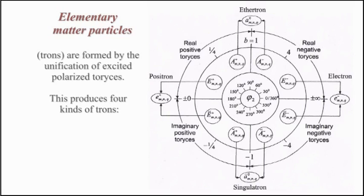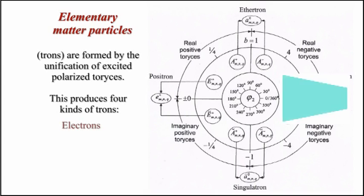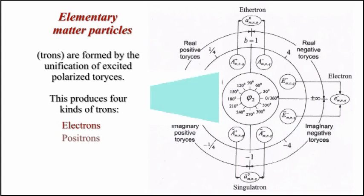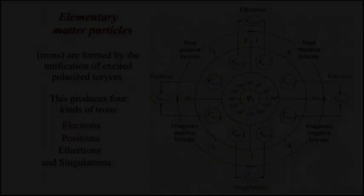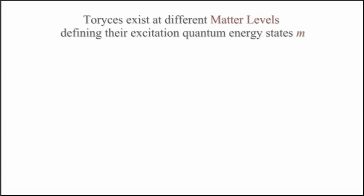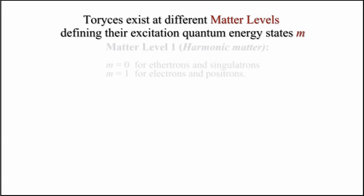Elementary matter particles, trones, are formed by the unification of excited polarized Toreases. This produces four kinds of trones: electrons, positrons, aetherotrons, and singulatrons. Toreases exist at different matter levels, defining their excitation quantum energy states m.